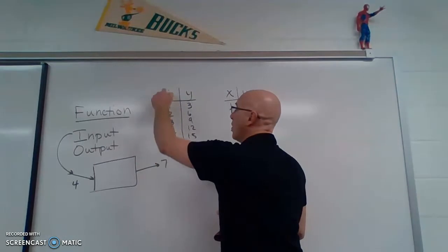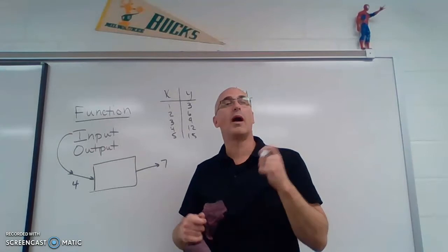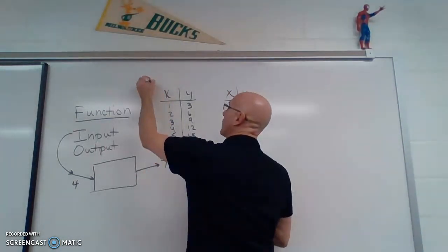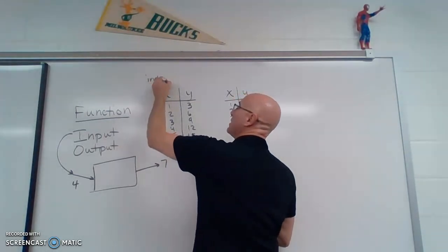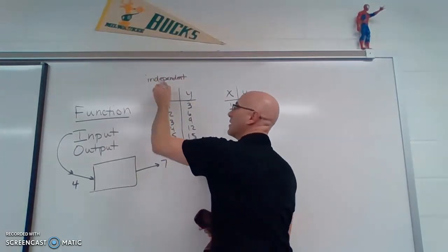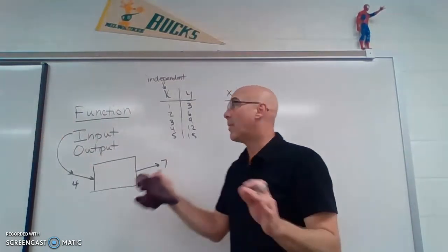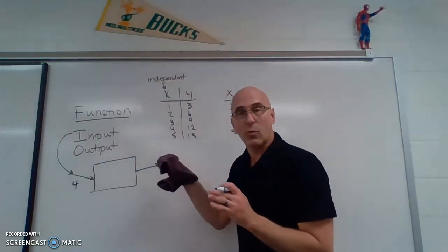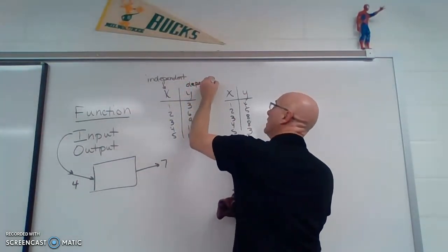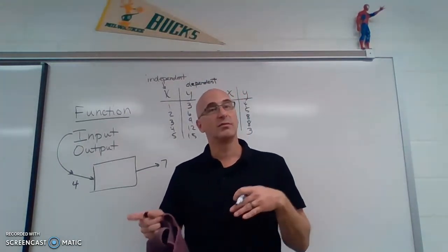So my y depends on what my x is. So the x is what is called the independent variable. I can independently select whatever number I want, but my y depends on what I select. So the y is called the dependent variable. It depends what I pick for x for what my y is.